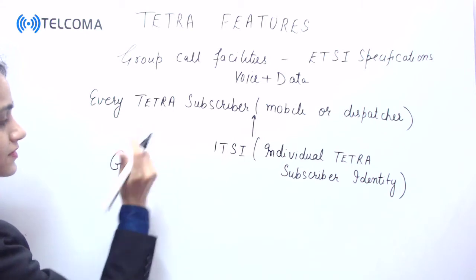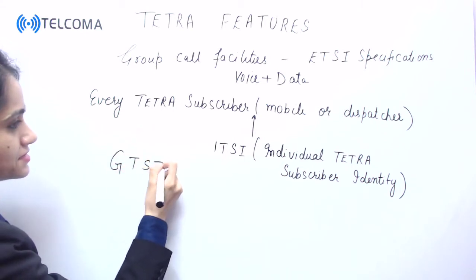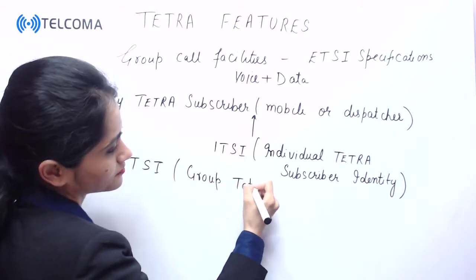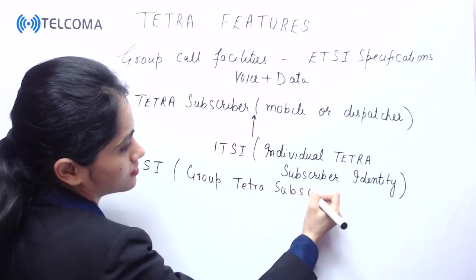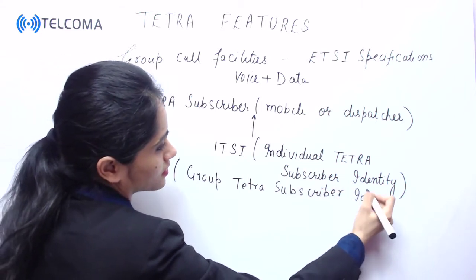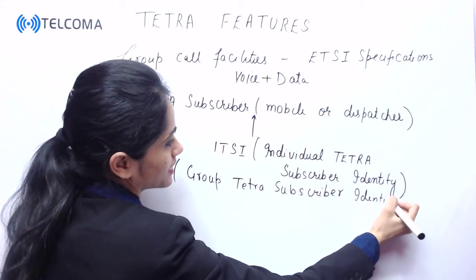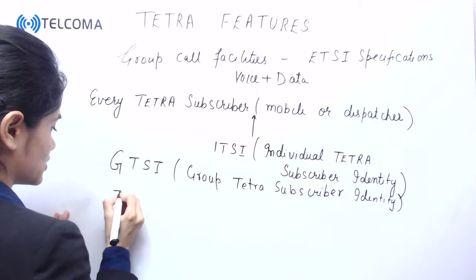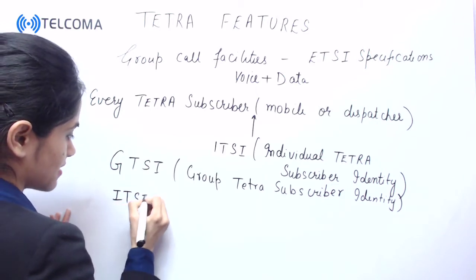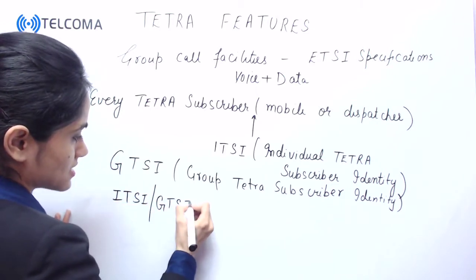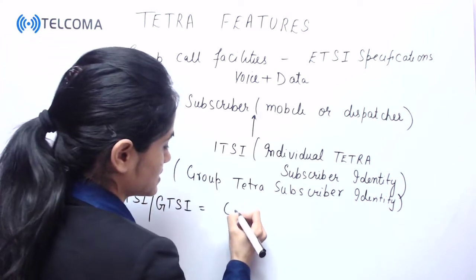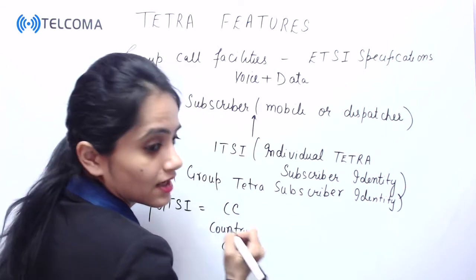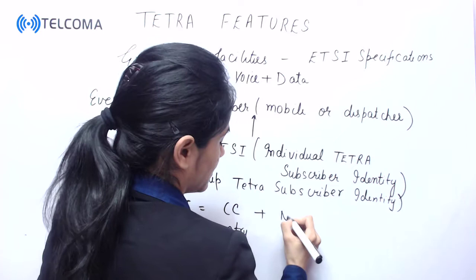If we talk about a group, the group is identified by a GTSI — Group TETRA Subscriber Identity — while an individual has an ITSI. The composition of both ITSI and GTSI starts with CC, which stands for Country Code, then NC.